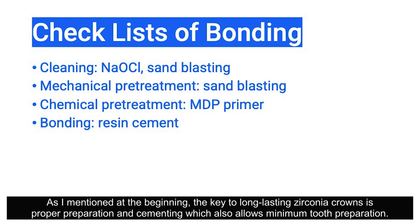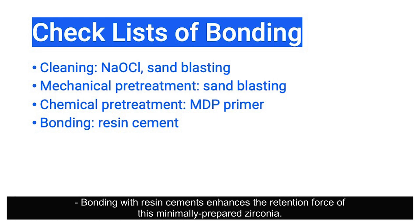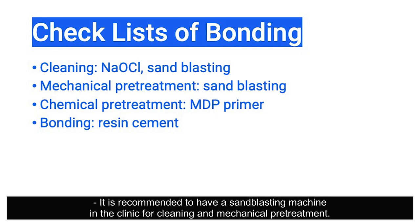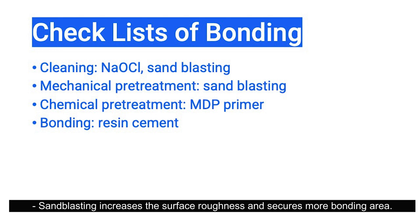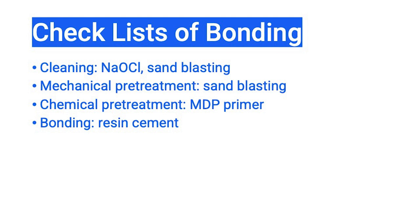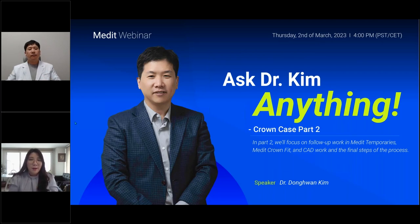As mentioned at the beginning, the key to a long-lasting zirconia crown is proper preparation and cementing, which also allows minimum tooth preparation. For bonding: resin cement enhances the retention force of minimally prepared zirconia. Contamination by saliva must be cleaned after try-in. It is recommended to have a sandblasting machine in the clinic for cleaning and mechanical pretreatment. Sandblasting increases surface roughness and secures more bonding area. The MDP primer adheres to the hydrophilic zirconia surface and increases bonding with the hydrophobic resin cement.